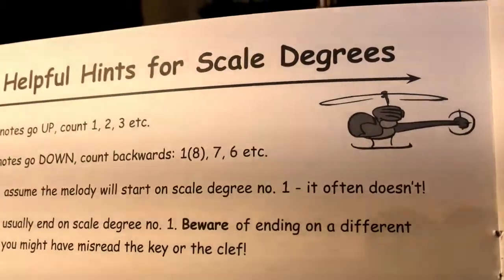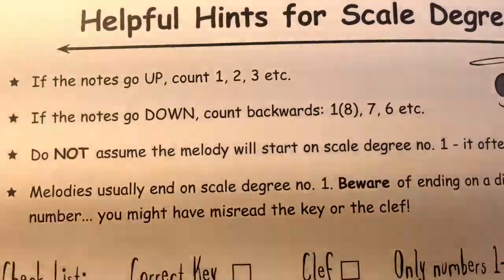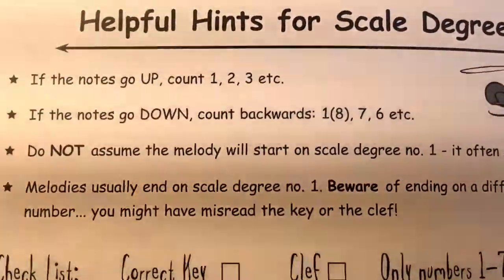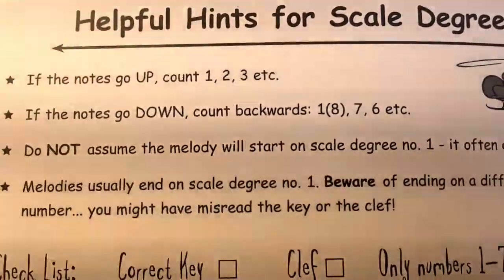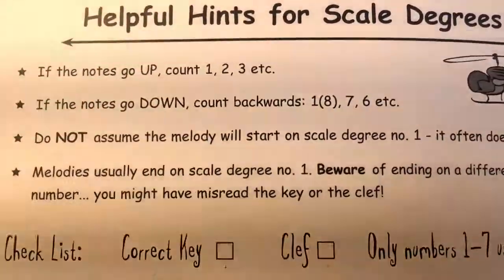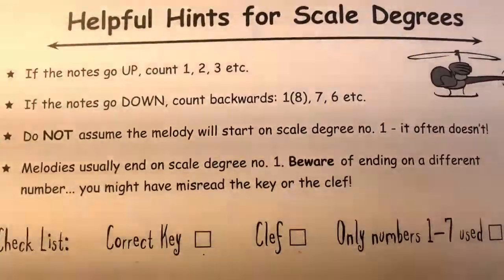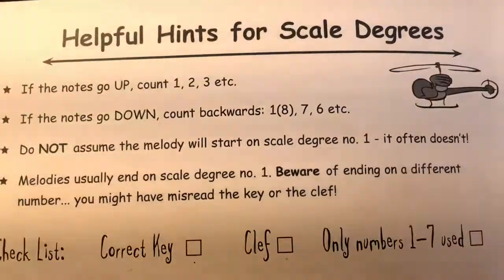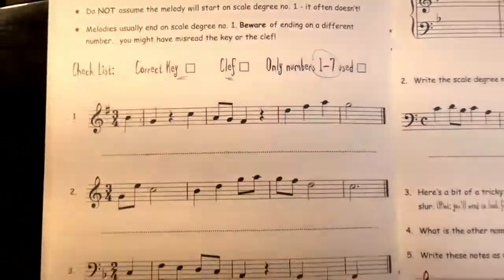Now onto page 38: helpful hints for scale degrees. If the notes go up in the melody, count forward: one, two, three, four, etc. If the notes go down, count backwards — from one we go backwards to seven, then six, five, four, etc. Do not assume the melody will start on scale degree one — it often doesn't. But melodies usually do end on scale degree one; if they don't, you may have misread the key or the clef.